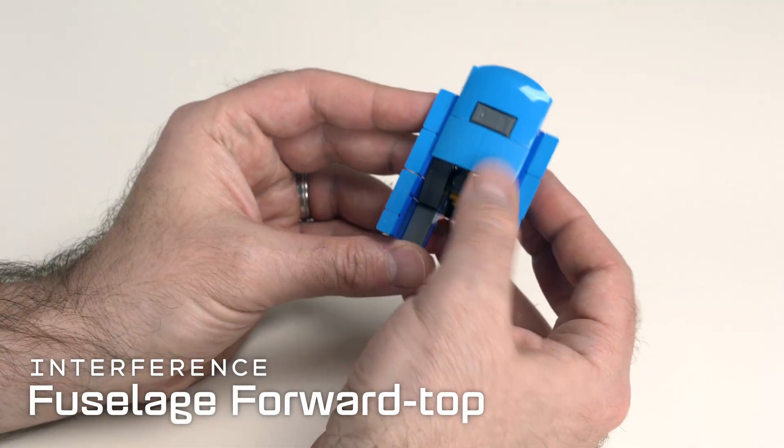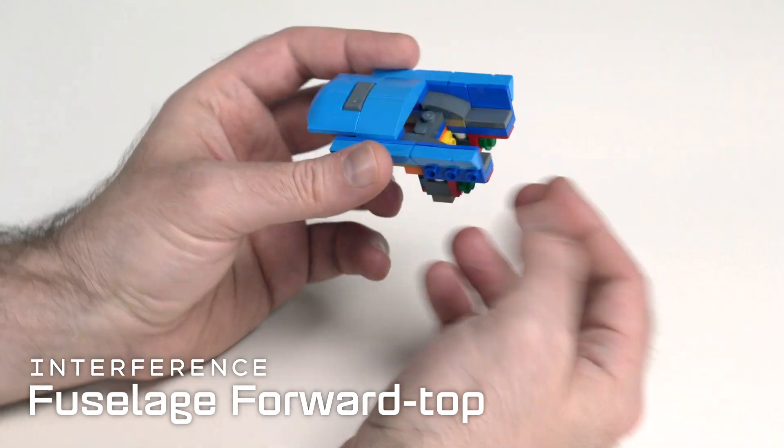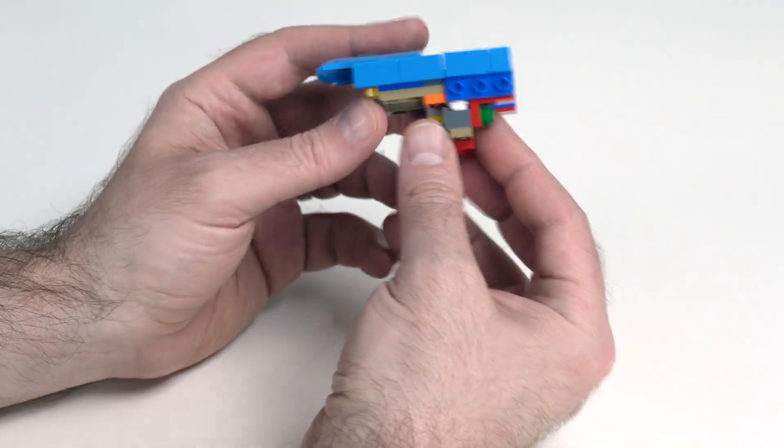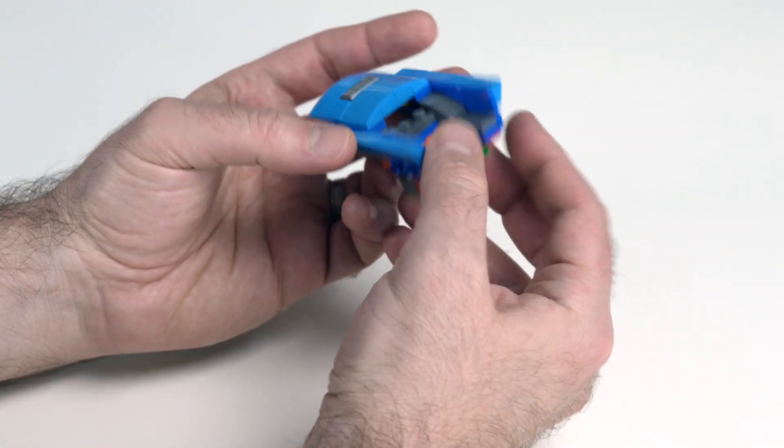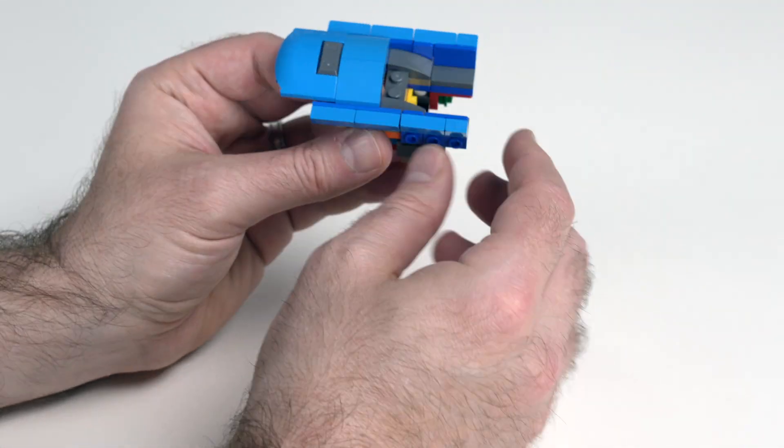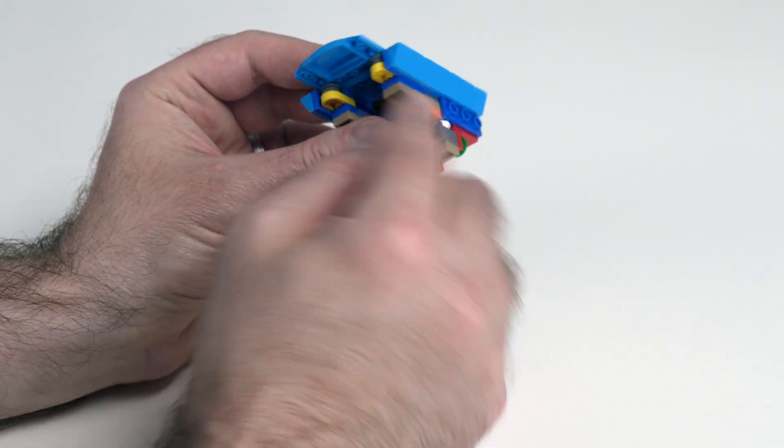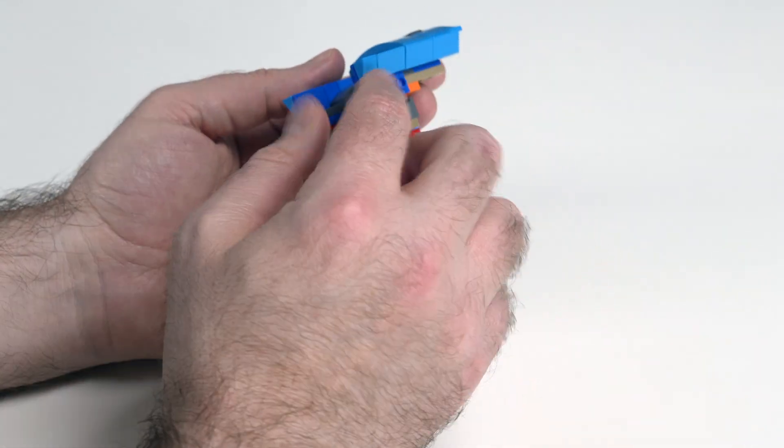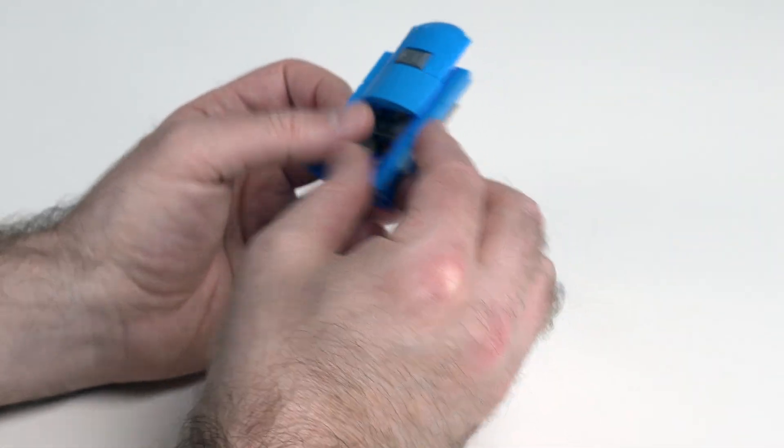Alright, I'm going to do the top of the fuselage, and that starts with this assembly. These blue bits are all brackets, some two high, some one high over on this side, and that's carrying these cheese slopes.